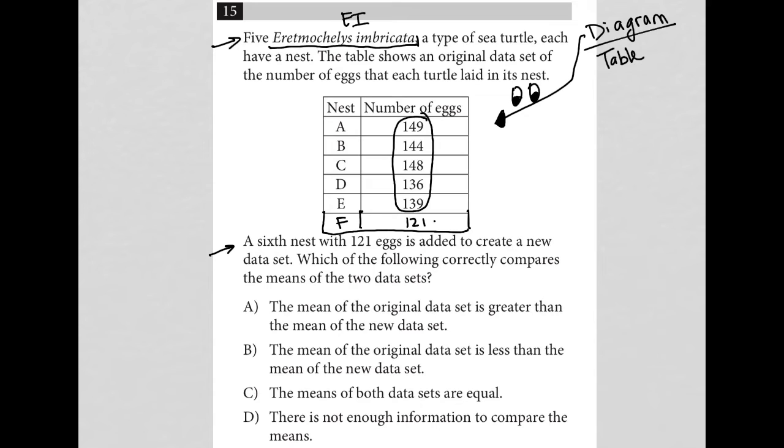But there is a way to prove this, right? So I can just find the mean. I can find the mean of A through E really quickly. Actually, it doesn't take all that much time. Go to my calculator. I add up those values for A through E and the number of eggs for A through E. So 149 plus 144 plus 148 plus 136 plus 139 equals 716.